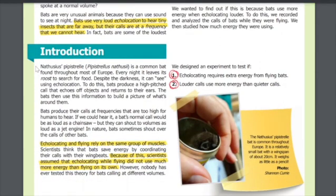Introduction: Nathusius' pipistrelle (Pipistrellus nathusii) is a common bat found throughout most of Europe. Every night it leaves its roost to search for food. Despite the darkness, it can see using echolocation. To do this, bats produce a high-pitched call that echoes off objects and returns to their ears. The bats then use this information to build a picture of what's around them.